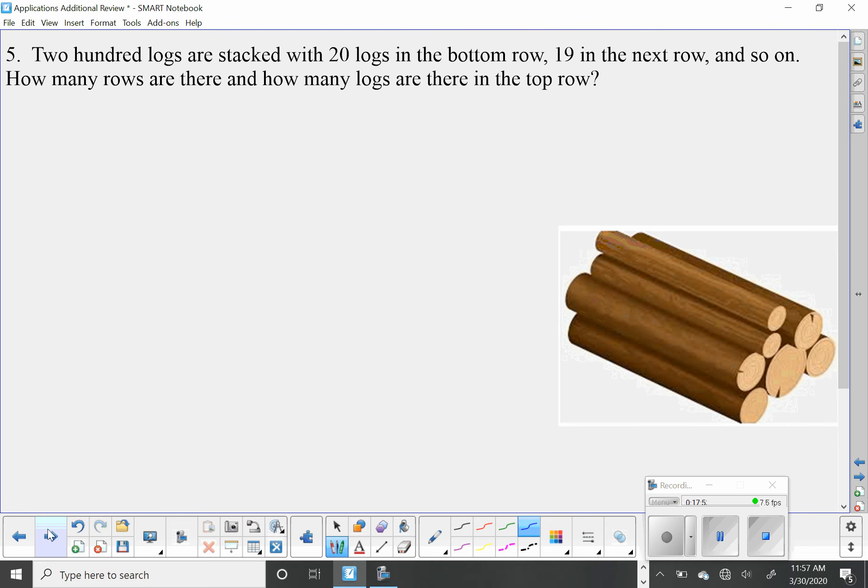We have 200 logs. That's a lot of logs. They're stacked with 20 logs in the bottom row, 19 in the next, and so on. How many rows are there, and how many logs are in the top row? So there's two questions you're being asked for: How many rows, which is n, and how many logs are in the top row, which is a sub n.